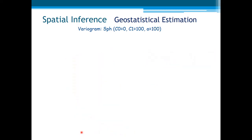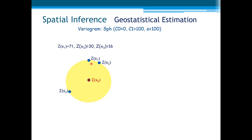Now let's see another situation where two samples are clustered — those two here. Here are the covariances. This is the difference from the previous example: the covariance between the samples x1 and x2 becomes higher.